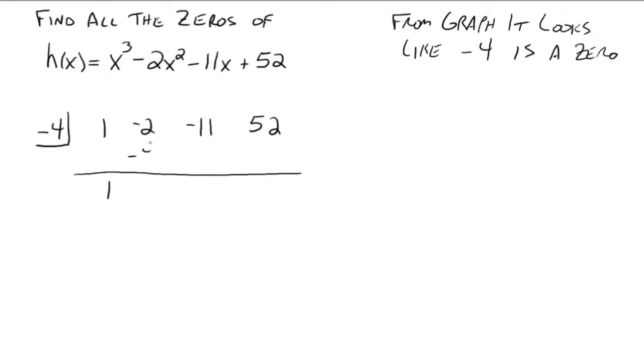So negative 4. That's what? Negative 6. That's 24. That's 13. That's negative 52, and that's 0. So your remainder is 0, so yay! Negative 4 is a zero to our polynomial.